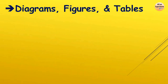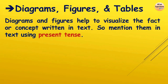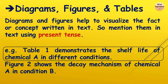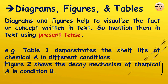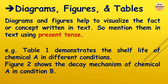With the methods section, diagrams, figures, and tables also appear in the research paper. Diagrams and figures help visualize the facts or concepts written in the text — you are presenting them for better clarity. We mention them using present tense: 'Table 1 demonstrates the shelf life of chemical A in different conditions.' Similarly, 'Figure 2 shows the decay mechanism of chemical A in condition B.' In this way, diagrams, figures, and tables are referenced in the text using present tense.